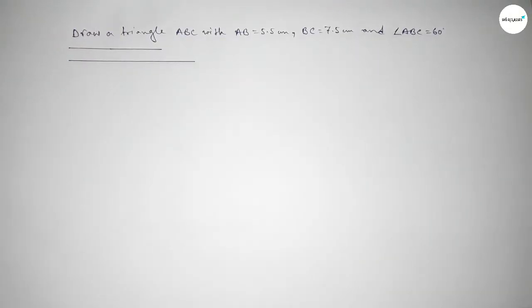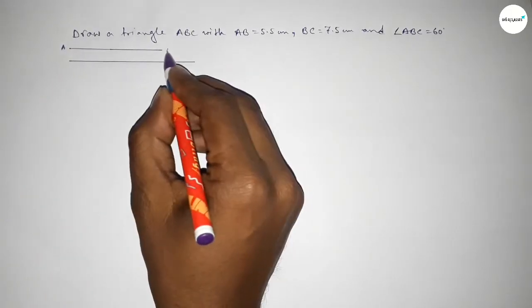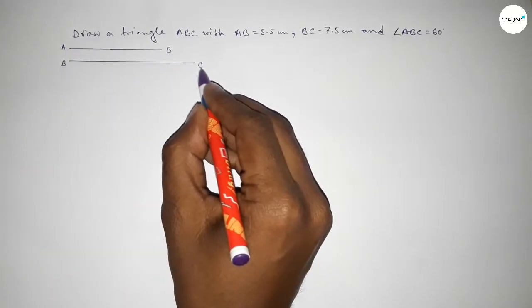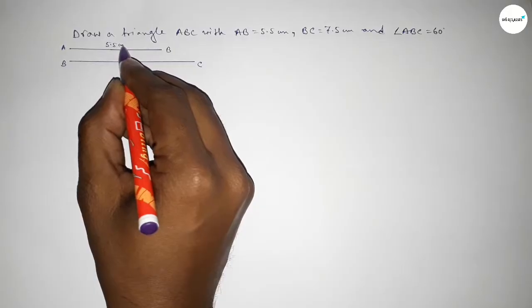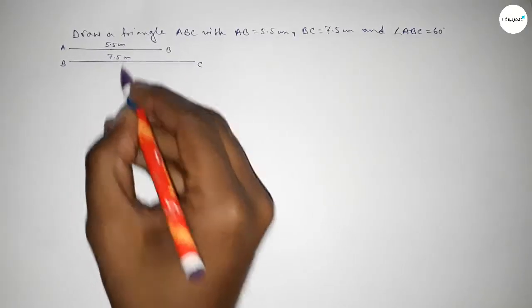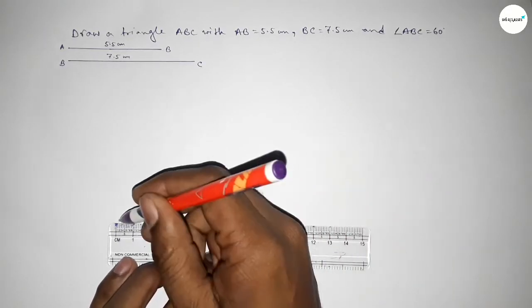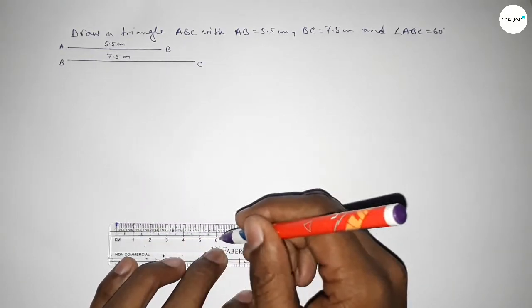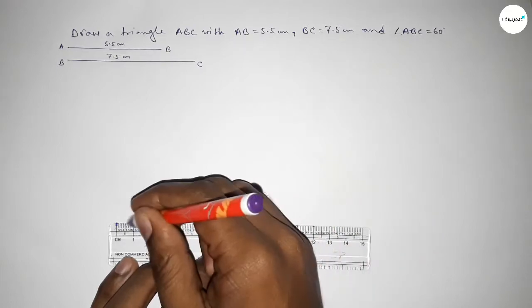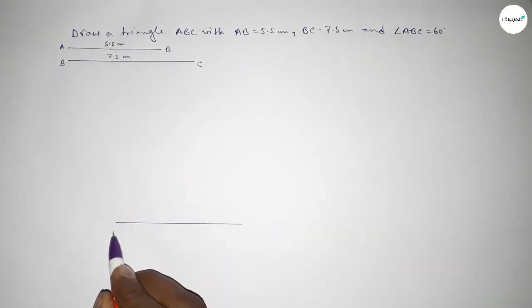And this is 7.5. So this is AB and this line BC. So this is 5.5 centimeters and this one 7.5 centimeters. Now drawing here a line of length 7.5 centimeters. So this is 7.5 centimeters and taking here B point and here C point.